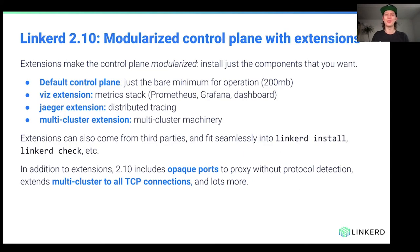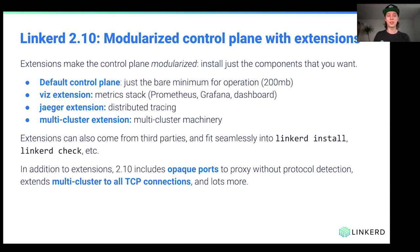In 2.10, the add-on idea came to fruition with a modularized control plane with extensions. We split the control plane up into multiple extensions to make it lighter, with less overhead, and to truly allow you to run Linkerd on any platform as light as possible. With Linkerd 2.10 you can pick and mix what you want with your Linkerd distribution. Out of the box, the control plane comes with service discovery, identity, and zero-config mTLS. Then we have the Viz extension for the metrics stack — Prometheus, Grafana dashboard, and Linkerd tap, which is an amazing tool — a Jaeger extension for distributed tracing, and the multi-cluster extension.